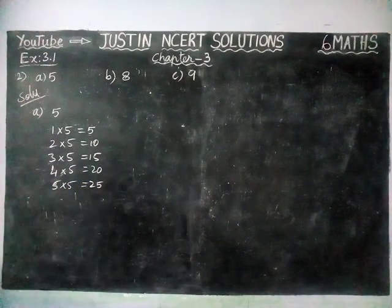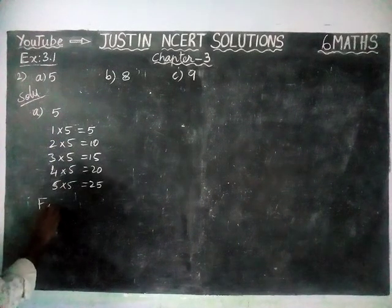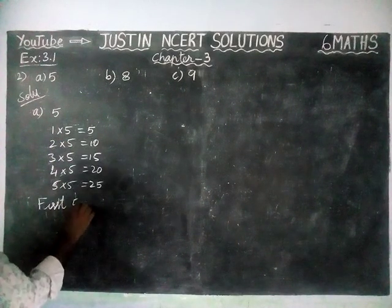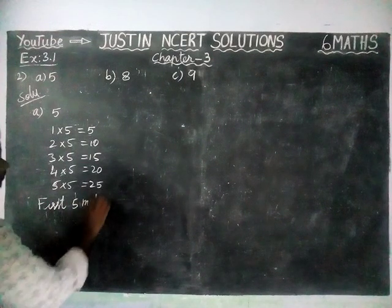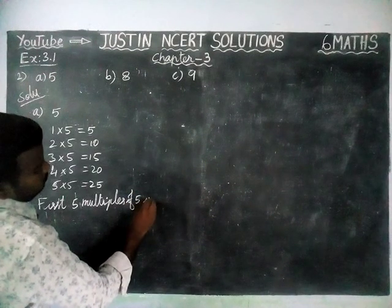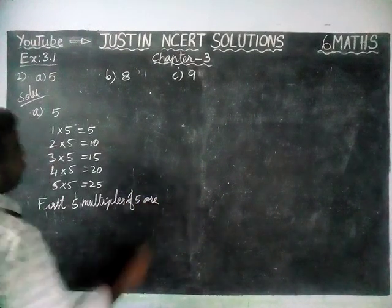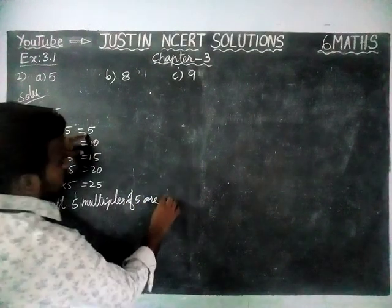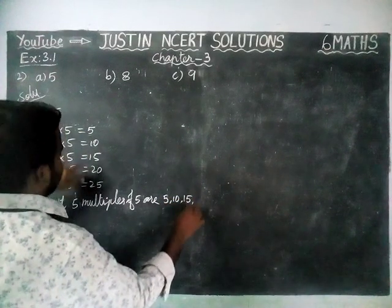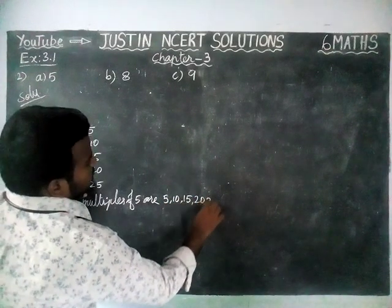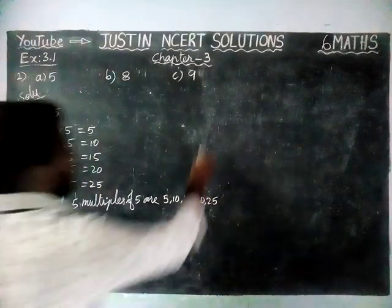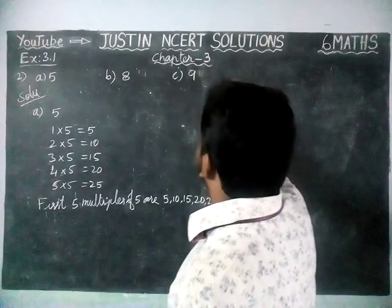So, the first 5 multiples of 5 are: 5, 10, 15, 20, 25.